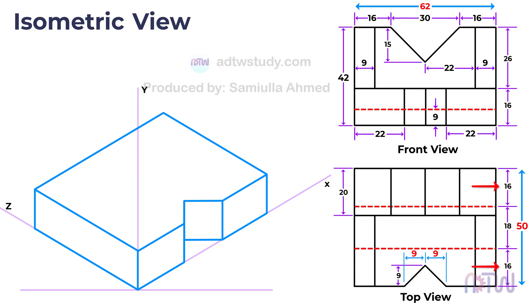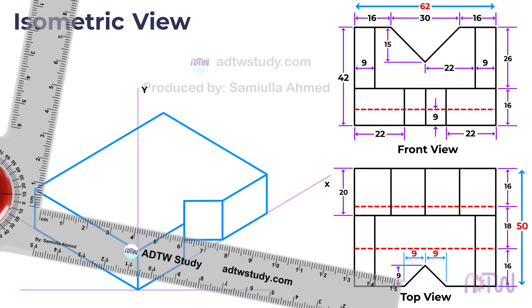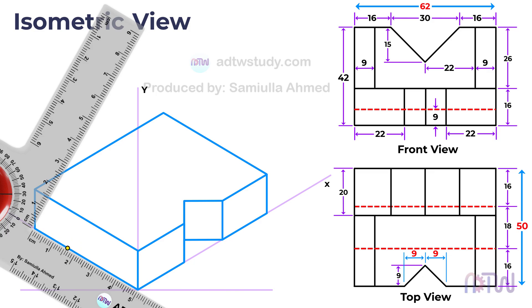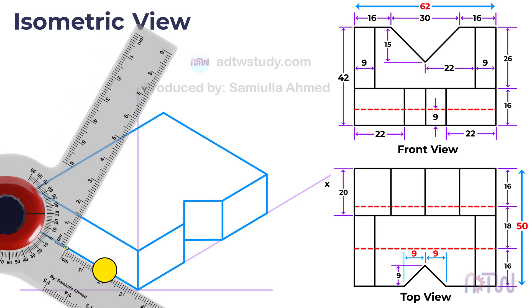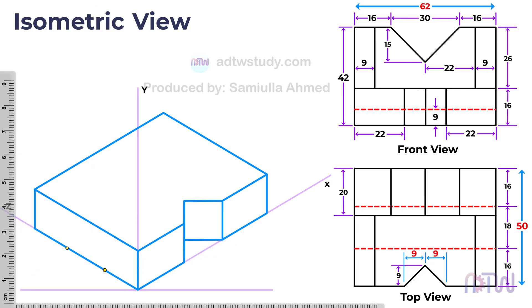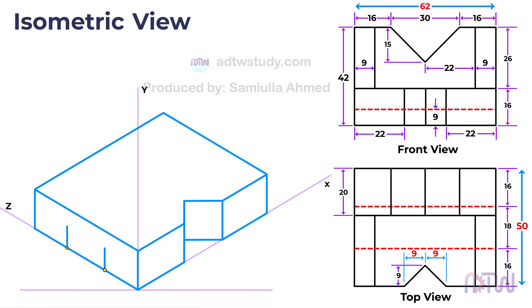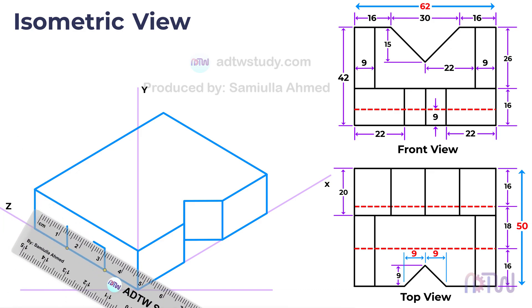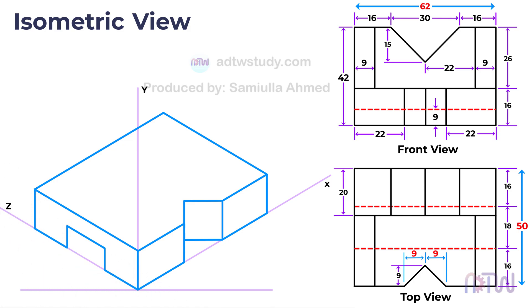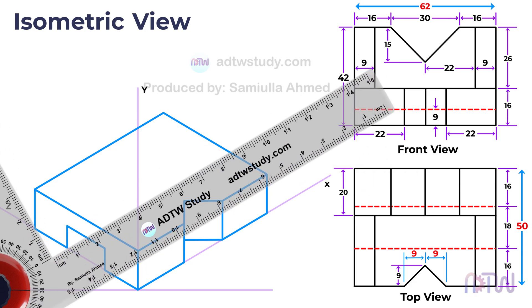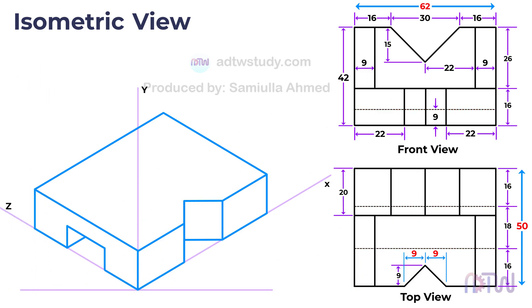Next, we can see dotted lines in the top view and front view indicating a slot in the base. The slot has a width of 18 millimeters in the top view and is exactly in the middle of the base. The depth of the slot is given as 9 millimeters in the front view. To create the slot, mark a point 16 millimeters away from any side along the z-axis, then mark another point 18 millimeters away from that point. Draw a vertical line of 9 millimeters from these two points, join the endpoints to complete the slot, and add the detailing as shown.